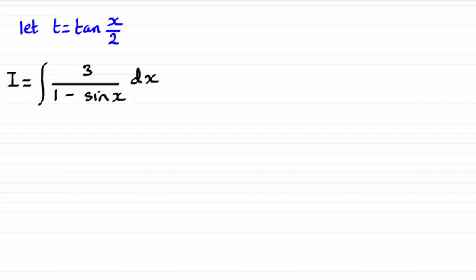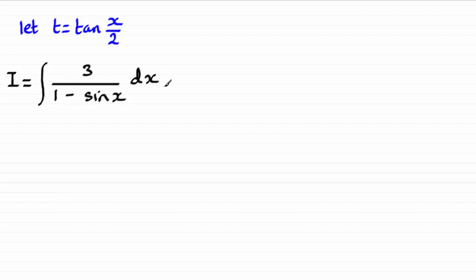In this video I want to introduce you to the Weierstrass substitution, that is t equals tan(x/2), this half angle. We use this substitution if you've got a trigonometric integral that is difficult to integrate — sometimes it will make it a lot easier to work with. This example is a good one to start with. I've called it i just to save space: i is the integral of 3 all over (1 minus sin x) with respect to x.